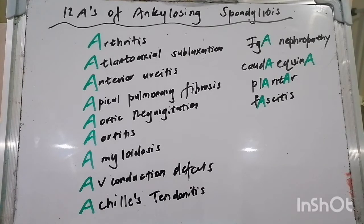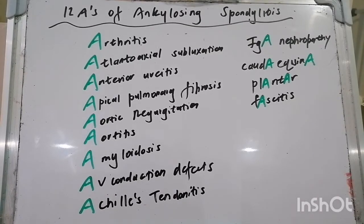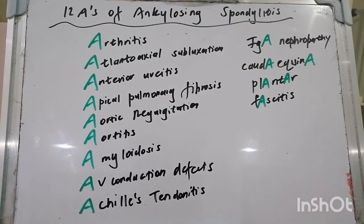So let's talk about the 12 A's of ankylosing spondylitis. As you know, ankylosing spondylitis is one of the four seronegative spondyloarthropathies that we spoke of in yesterday's mnemonic. It classically involves the spine and you have peripheral arthritis as well. Remember the features of all the seronegative spondyloarthropathies is BEADS: backache, enthesopathy, peripheral arthritis, dactylitis, and spinal involvement.